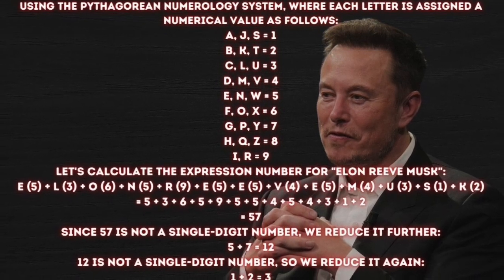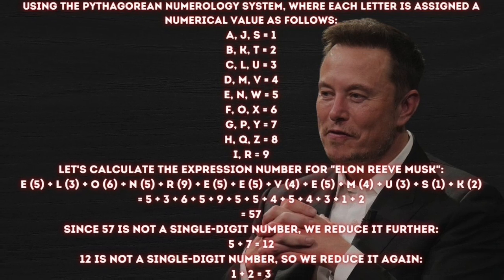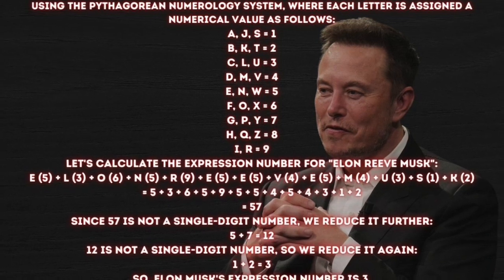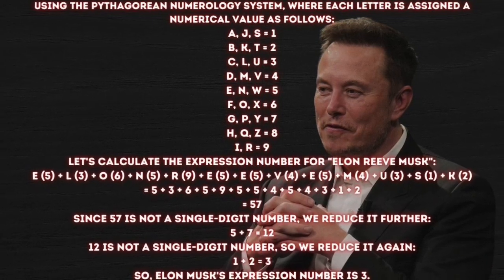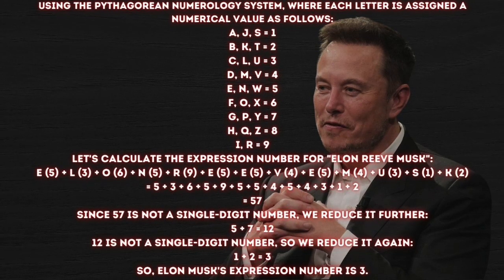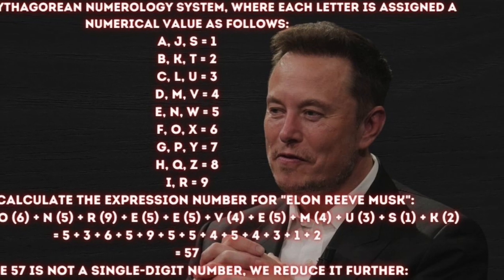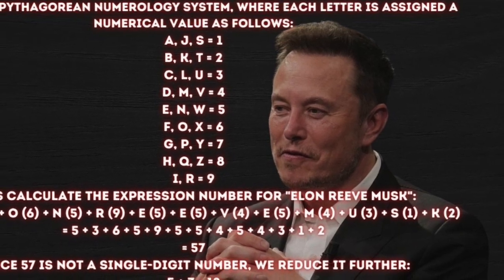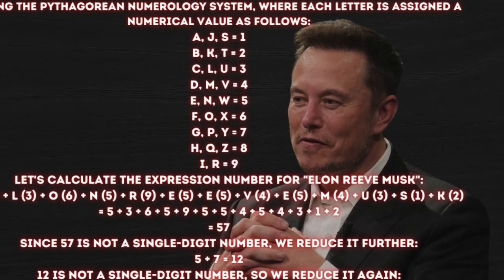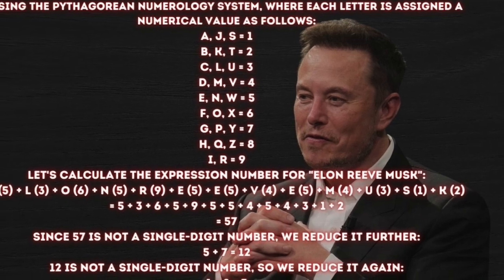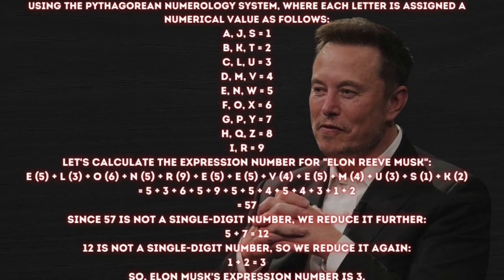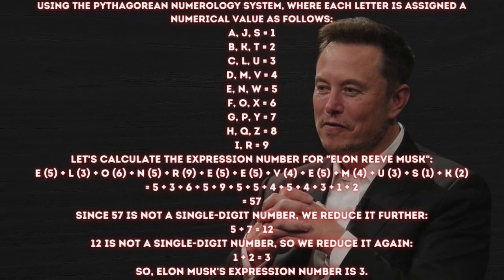E=5, L=3, O=6, N=5, R=9, E=5, E=5, V=4, E=5, M=4, U=3, S=1, K=2 — totaling 57. Since 57 is not a single-digit number, we reduce it further: 5 plus 7 equals 12. Since 12 is not a single-digit number, we reduce it again: 1 plus 2 equals 3. So Elon Musk's expression number is 3.